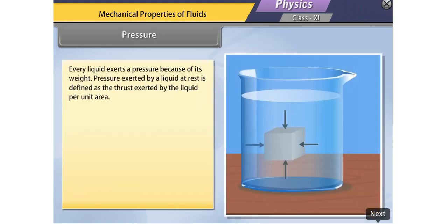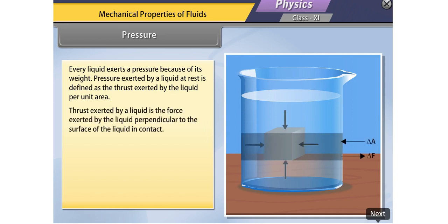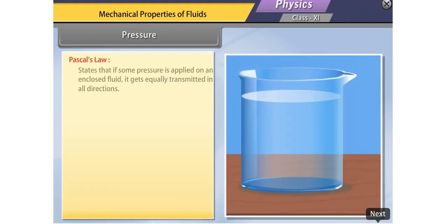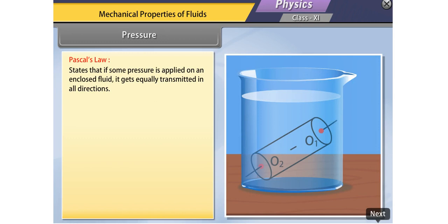Every liquid exerts a pressure because of its weight. Pressure exerted by a liquid at rest is defined as the thrust exerted by the liquid per unit area. Thrust exerted by a liquid is the force exerted perpendicular to the surface of the liquid in contact. Pressure P equals thrust upon area: P = F/A. Its SI unit is Newton per meter squared, and the dimensional formula is ML⁻¹T⁻². Pascal's law states that if pressure is applied on an enclosed fluid, it gets equally transmitted in all directions.